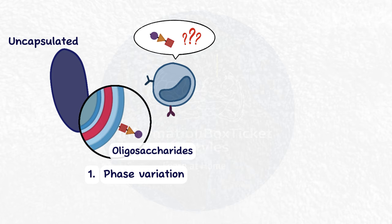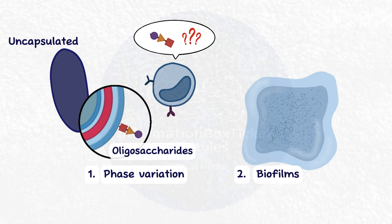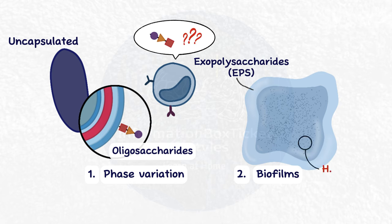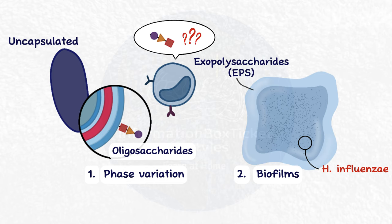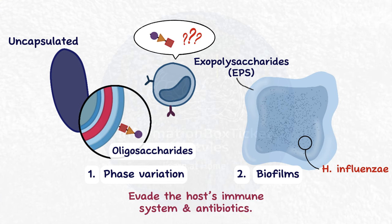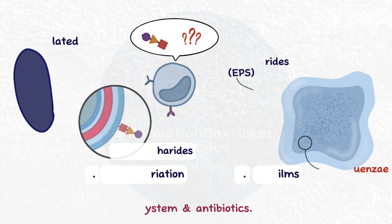Finally, unencapsulated bacteria can generate biofilms. A biofilm is essentially a coating of goop-like substance composed of exopolysaccharides, or EPS, in which Haemophilus influenzae bacteria reside and multiply. When comparing a biofilm to strawberry jam, the seeds are the bacteria and the remainder of the jam is the EPS. The bacteria in the biofilm evade the host's immune system and antibiotics.